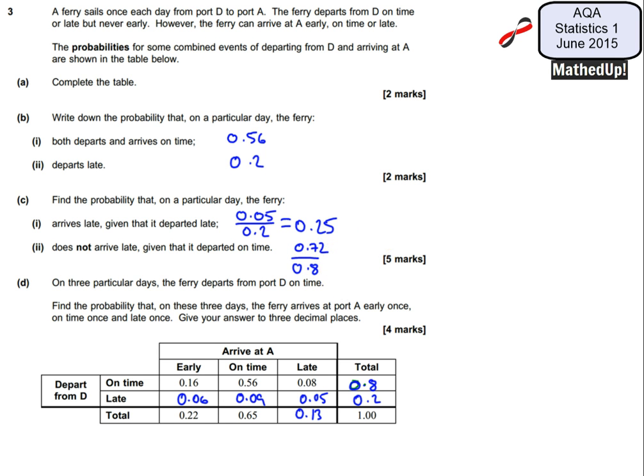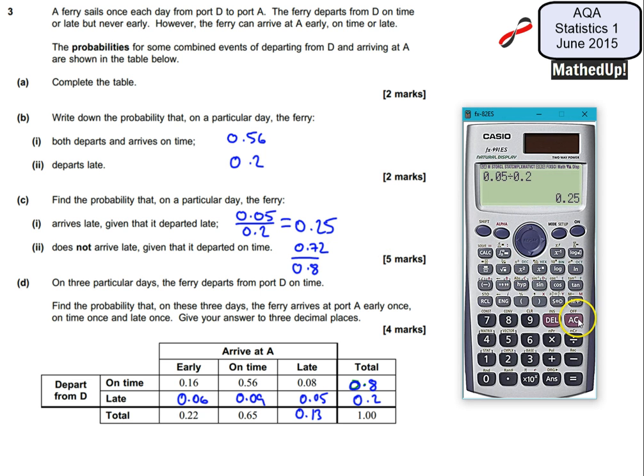And 0.72 divided by 0.8 that's going to give us 0.9.